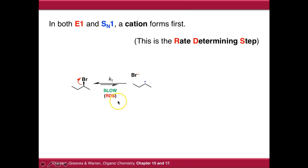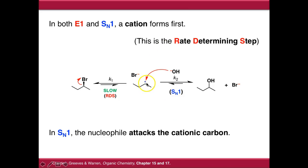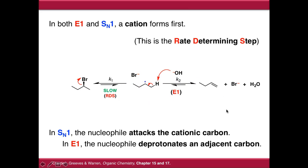This is the slowest step — the rate determining step. In an SN1 reaction, the nucleophile directly recombines with the carbocation and we end up with our substituted product. In an E1 reaction, after we form the carbocation intermediate, our nucleophile is going to deprotonate the adjacent position — rather than directly recombining with the cation, it removes the proton from the carbon next to it and pushes the electrons from that C-H bond onto the cation, which forms an alkene or a carbon-carbon double bond.